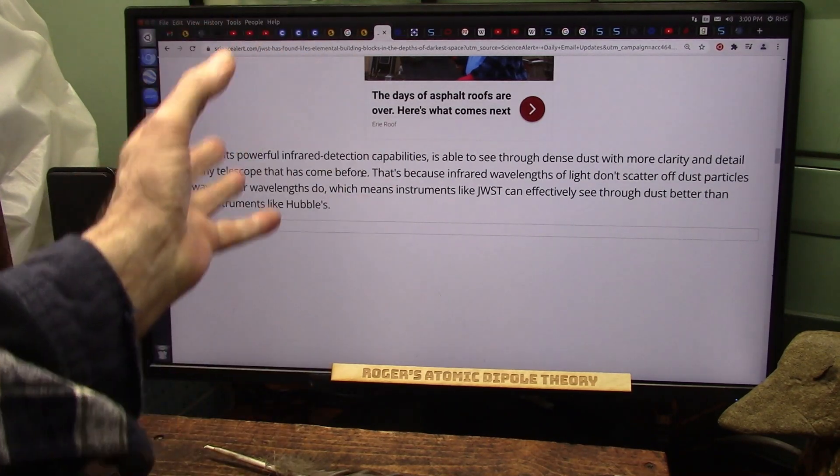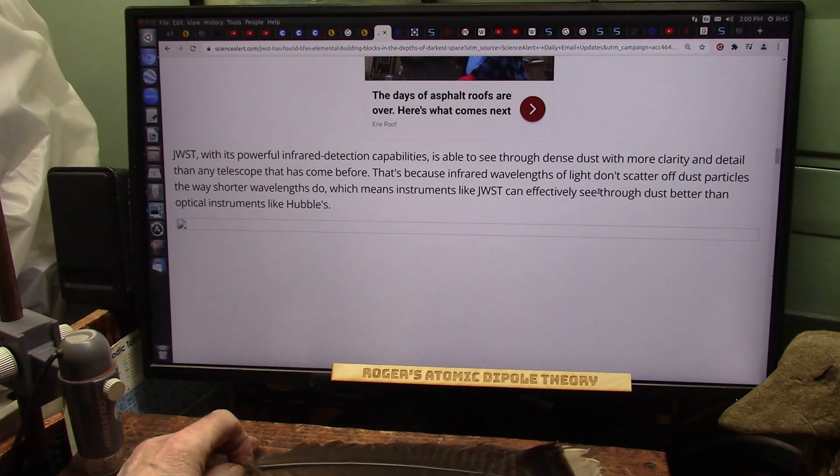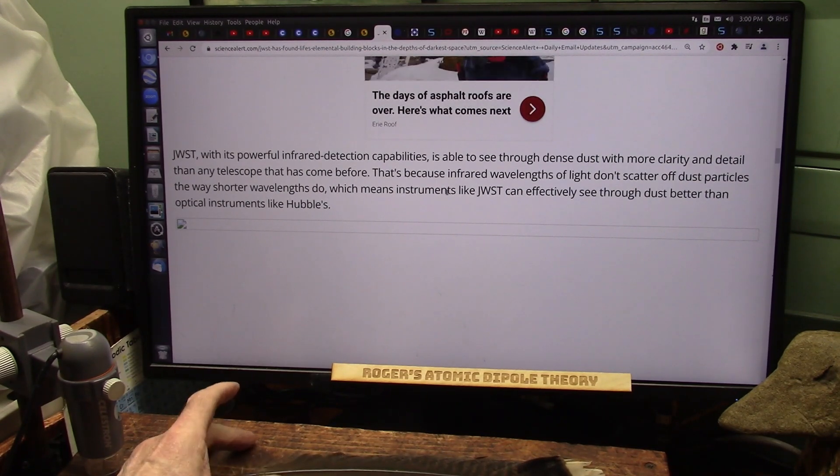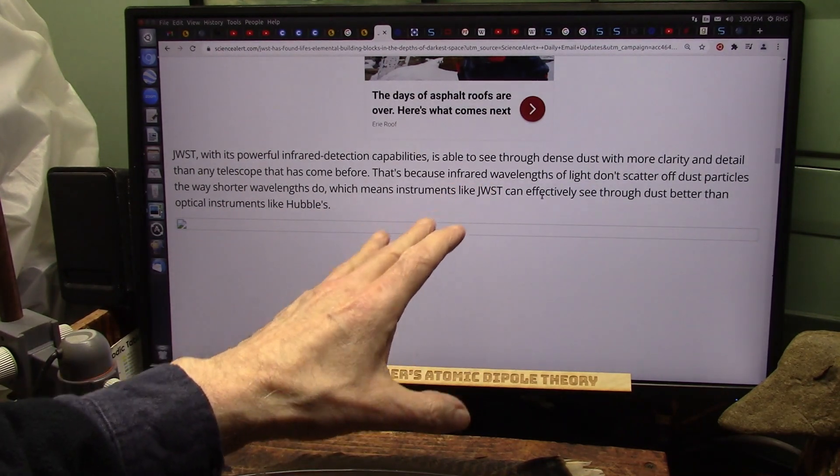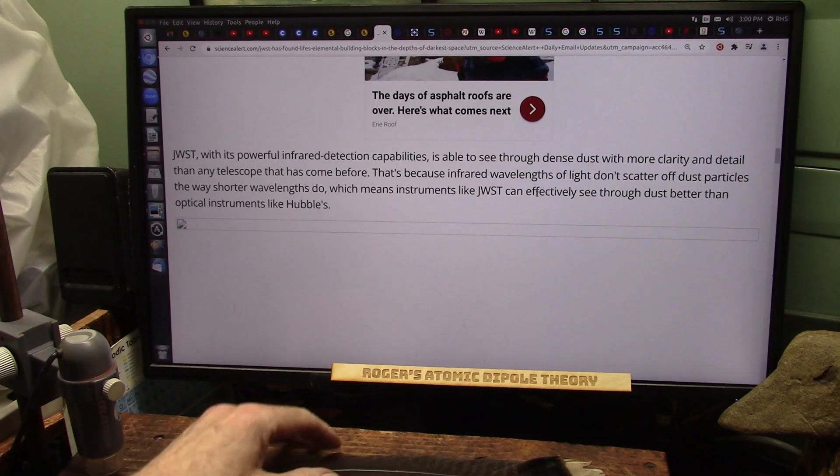That's because space is filled with this dense dust. Infrared wavelengths of light don't scatter off dust particles the way shorter wavelengths do, which means this James Webb Space Telescope can effectively see through all this dust better than optical instruments like Hubble.